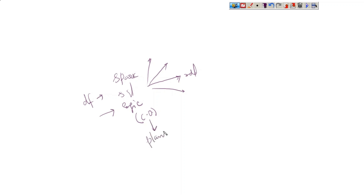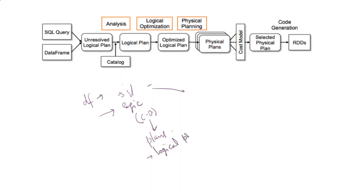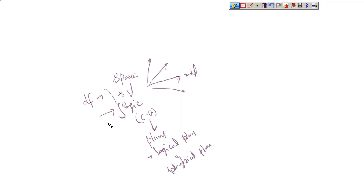Internally, the Catalyst Optimizer creates certain plans — called logical plans and physical plans — to make the decision about which approach will give the best performance. To convert DataFrame programming into RDD programming, multiple approaches exist, and the Catalyst Optimizer evaluates them through these plans.